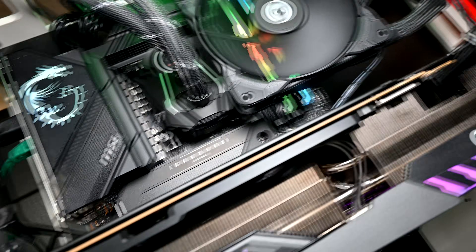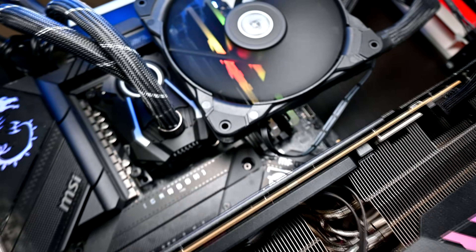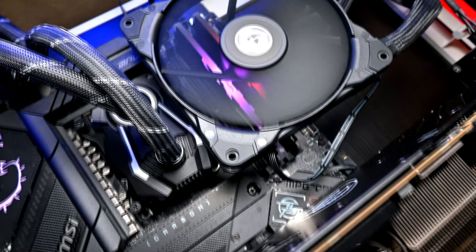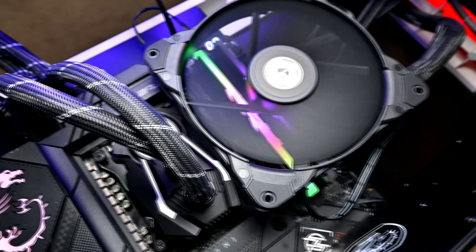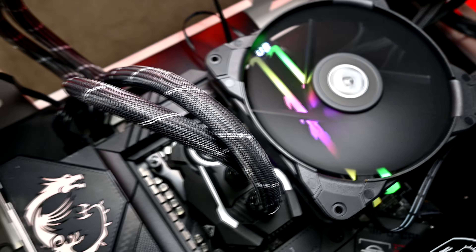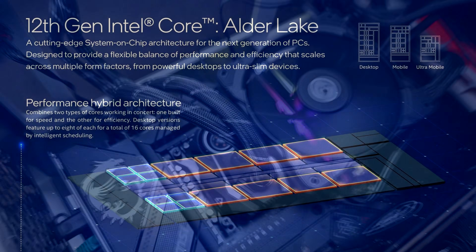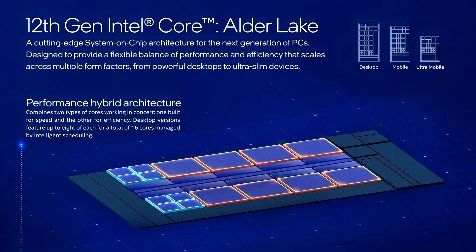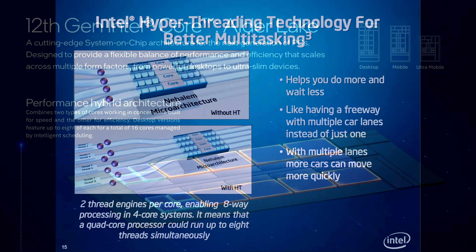Once I saw the results from testing E-cores, I had been wondering that since this modern Intel architecture utilizes smaller efficiency cores to handle background tasks and facilitate multi-threading workloads, will we get to a point where hyper-threading is no longer necessary for the larger P-cores?